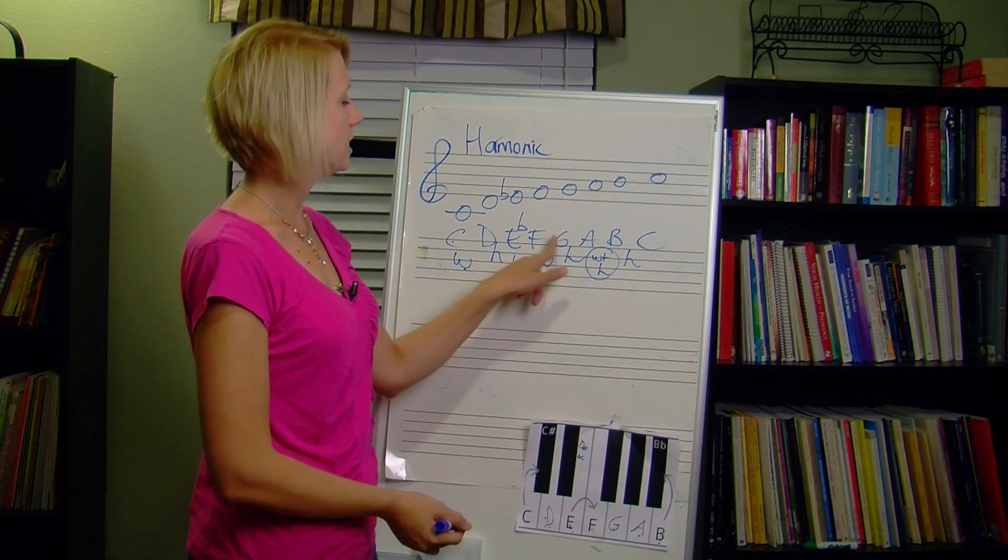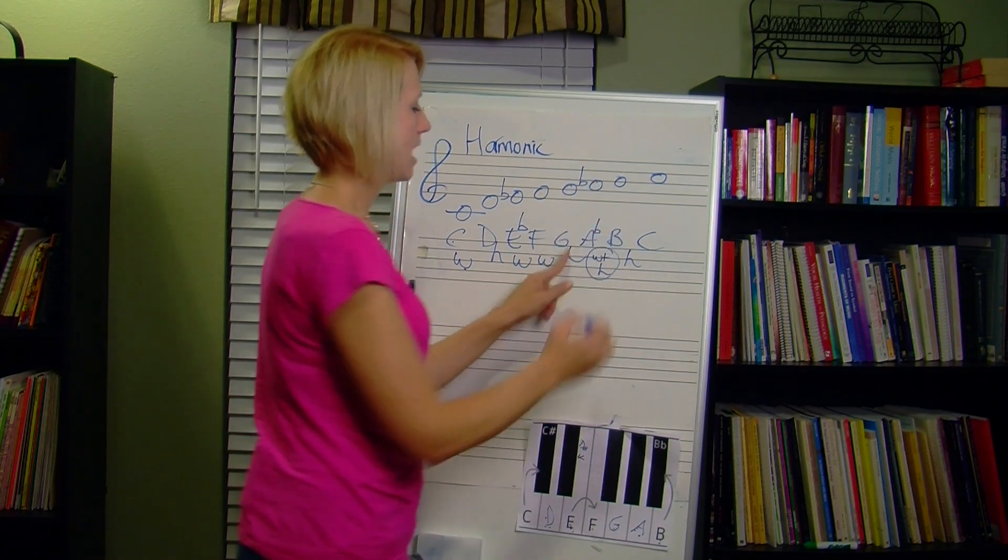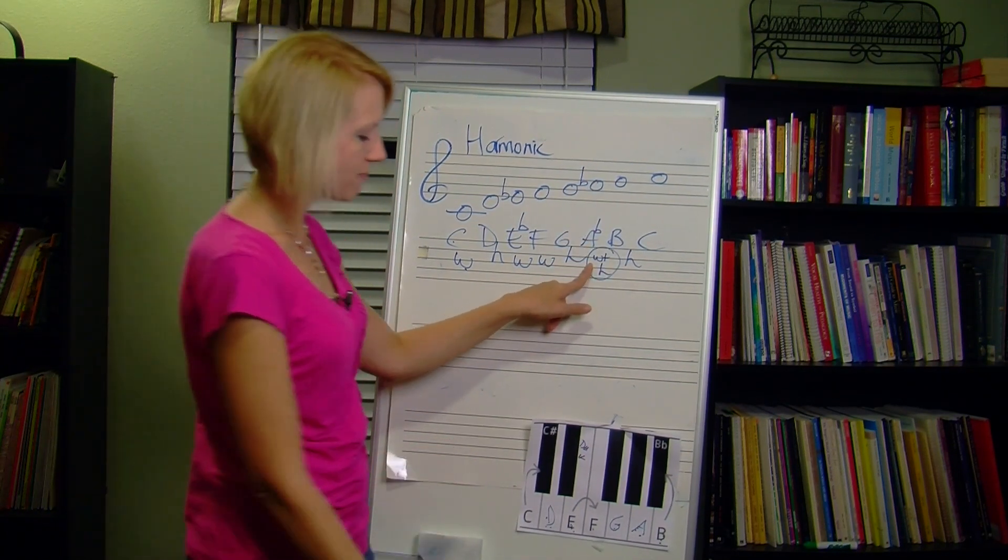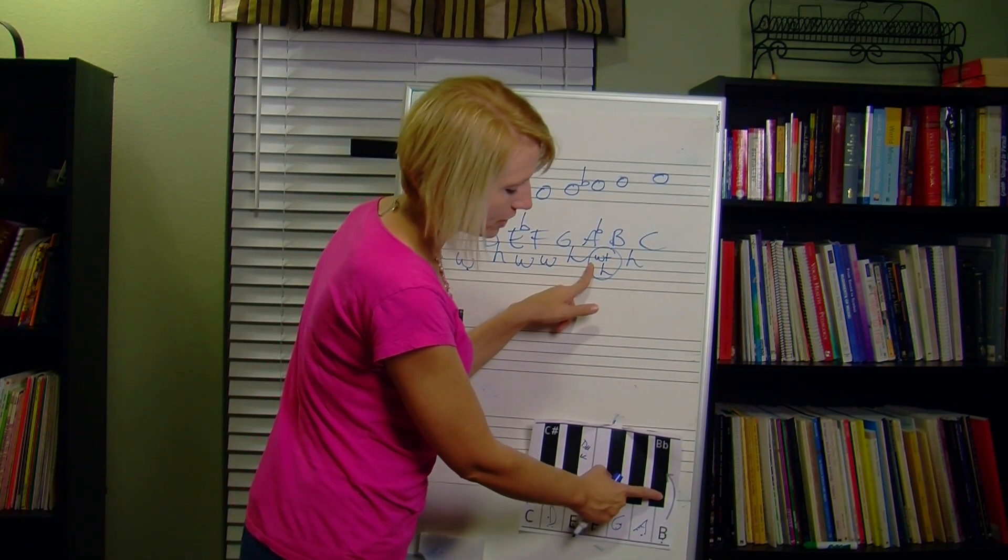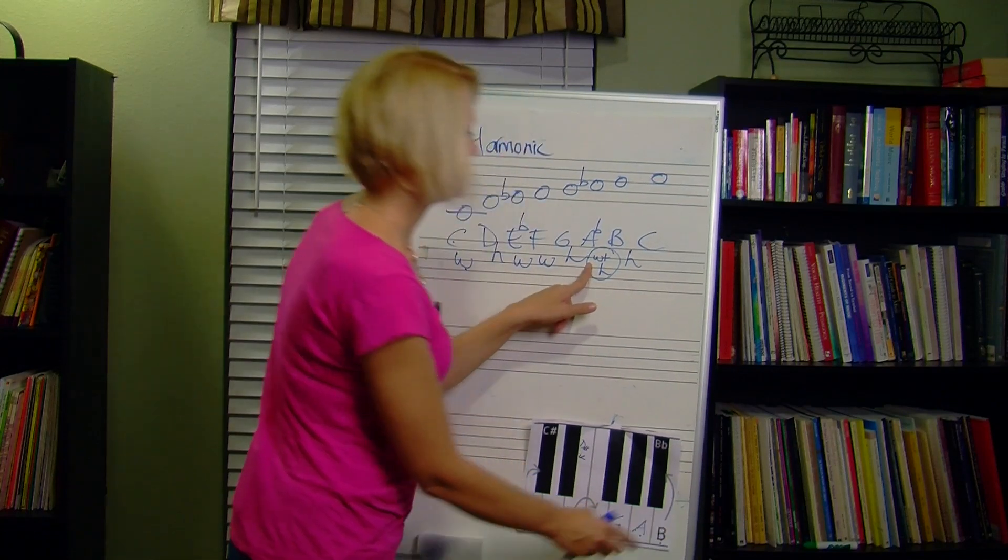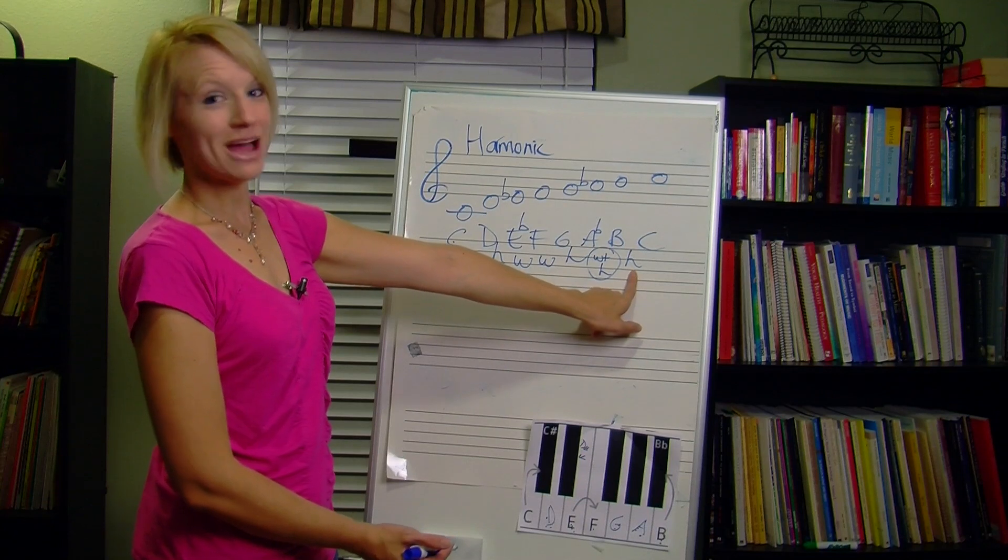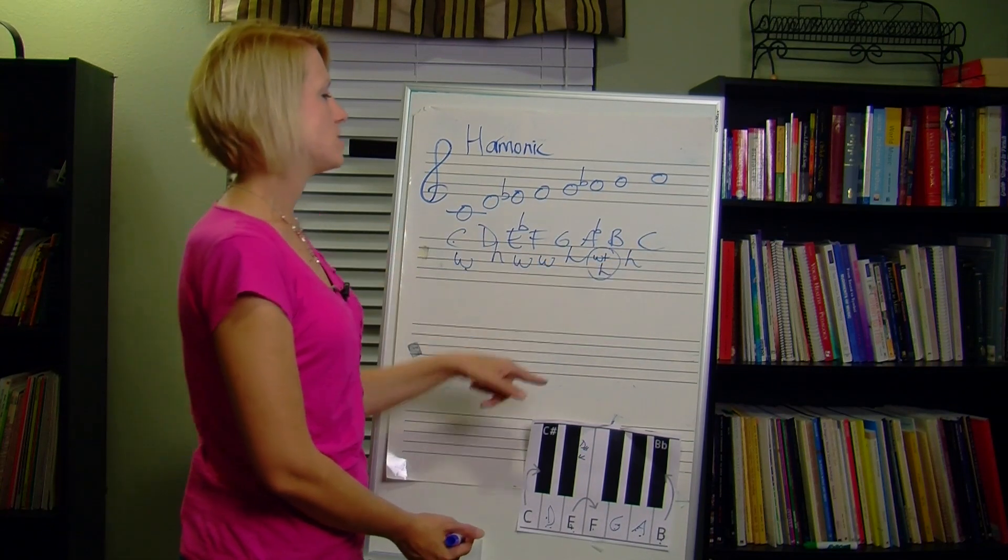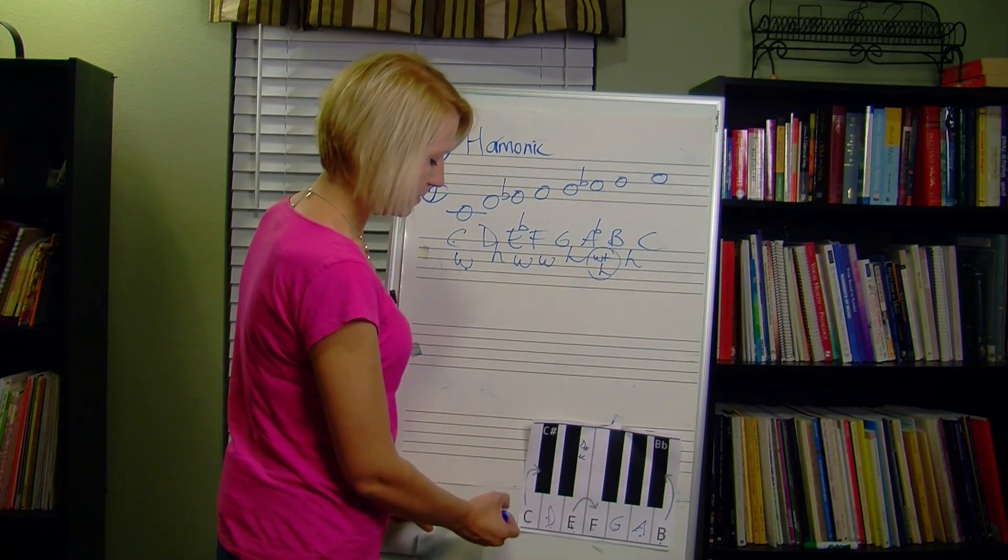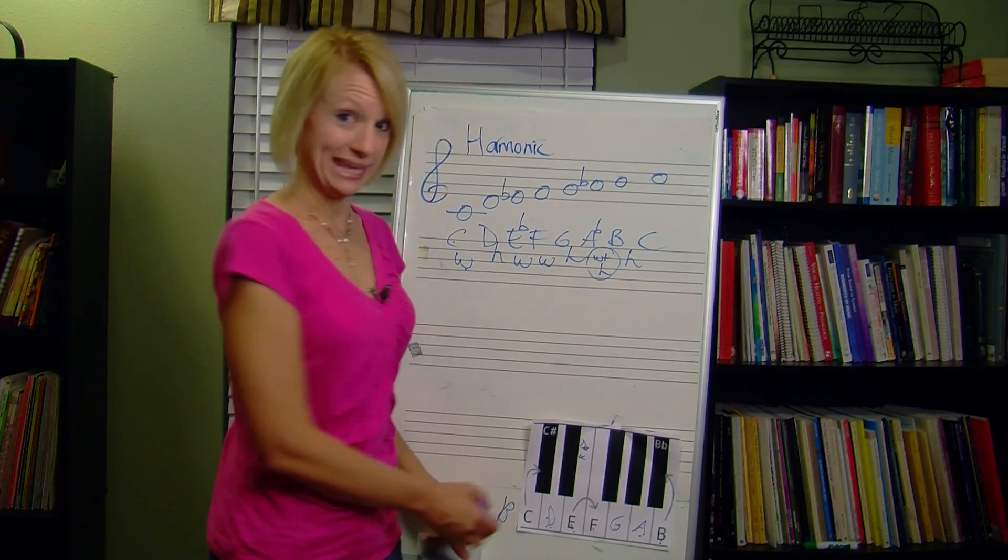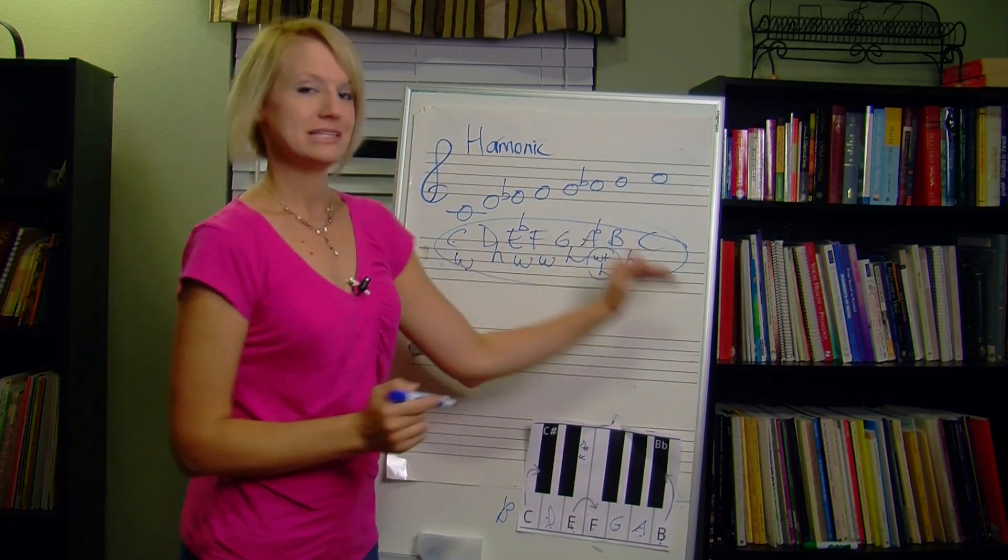A flat, now we go up whole plus half. So we were on A flat. Whole step takes me to that B flat that we had earlier. One more half takes me to plain old B, so we don't do anything. Remember, at the end that should be right, because you can never change the last note. Is it a half step between B and C? Yes it is. So this is harmonic minor, using this pattern directly. You decide. Method one, method two.